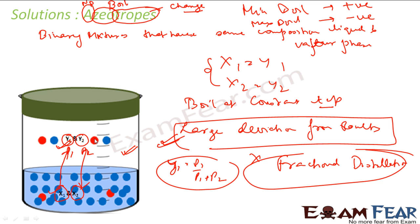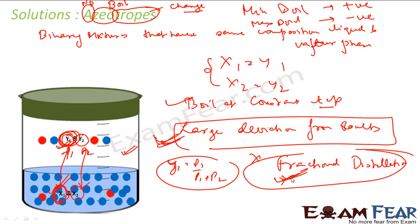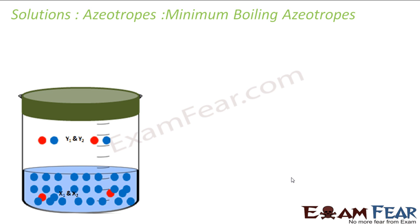To summarize: the name azeotrope means no change in boiling — even if you boil the mixture, there is no change in concentration; the vapor phase and liquid phase will have similar concentration. They boil at constant temperature and show large deviation from Raoult's Law, which is why you won't be able to purify this kind of solution using fractional distillation. They come in two types: minimum boiling and maximum boiling azeotropes.